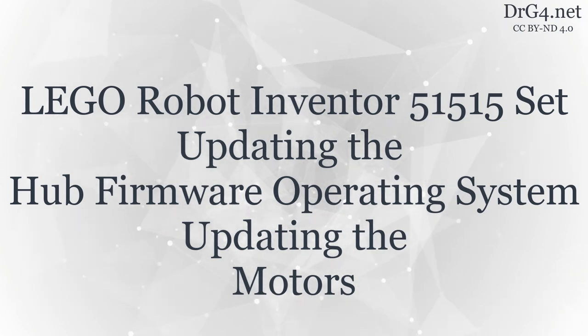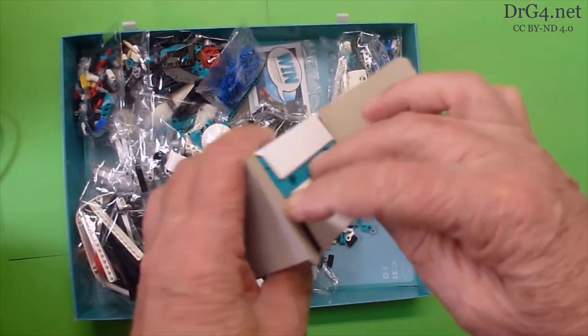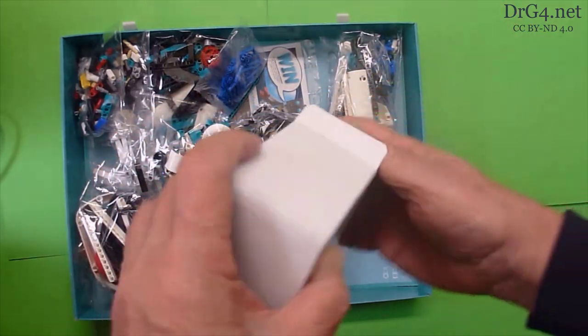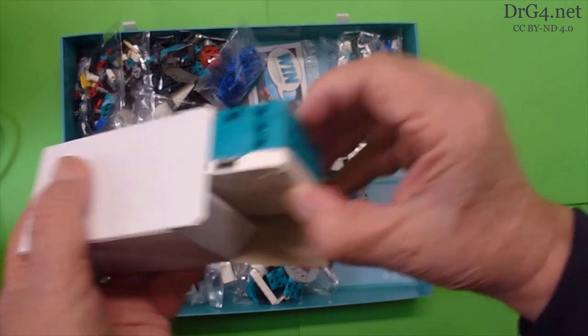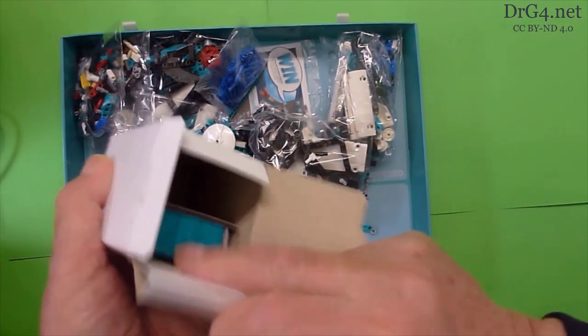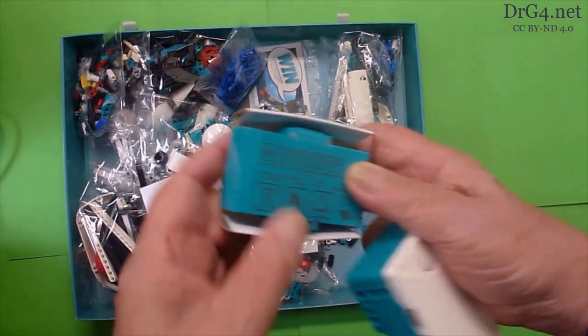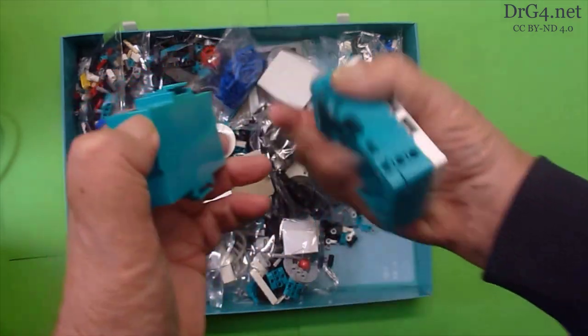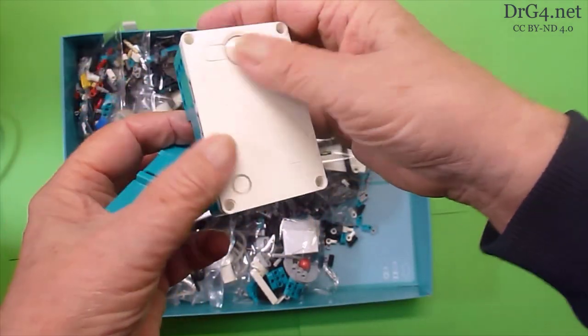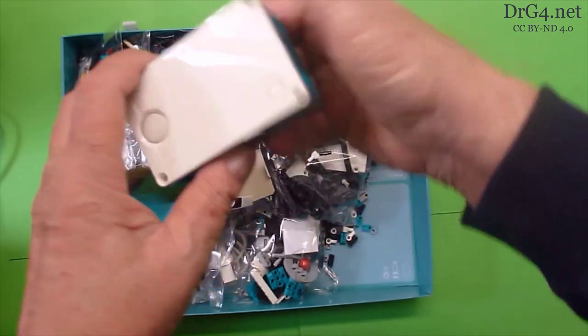One of the boxes I opened first was the computer box or hub as LEGO calls it. The hub is the white and blue one. The all blue one is the battery that fits inside the hub. It fits quite easily as you can see.